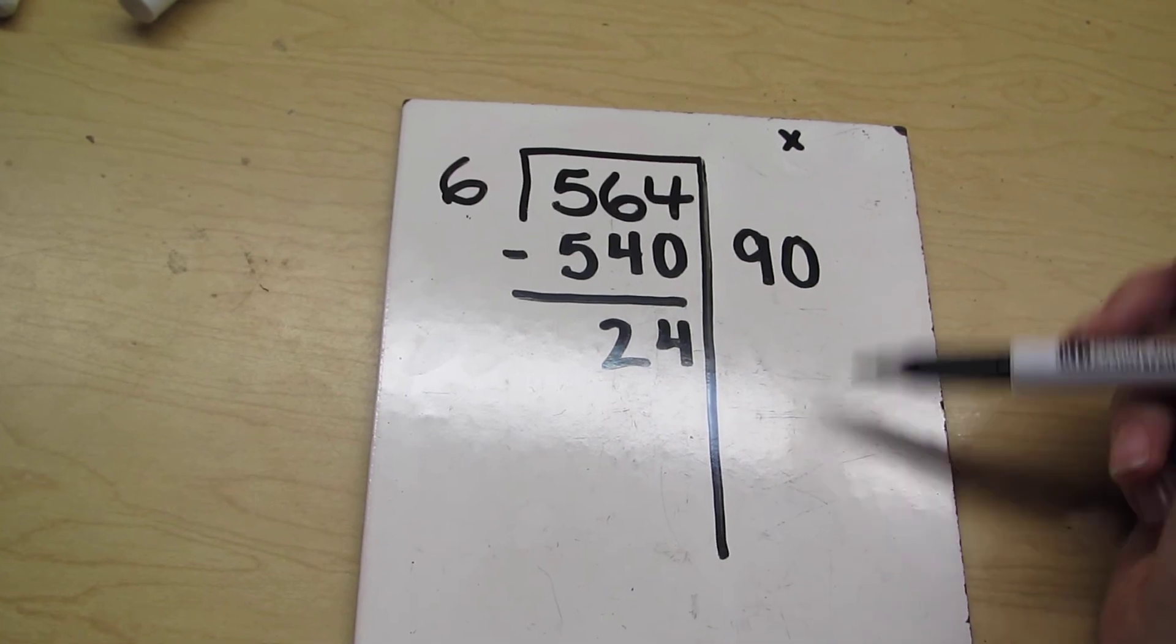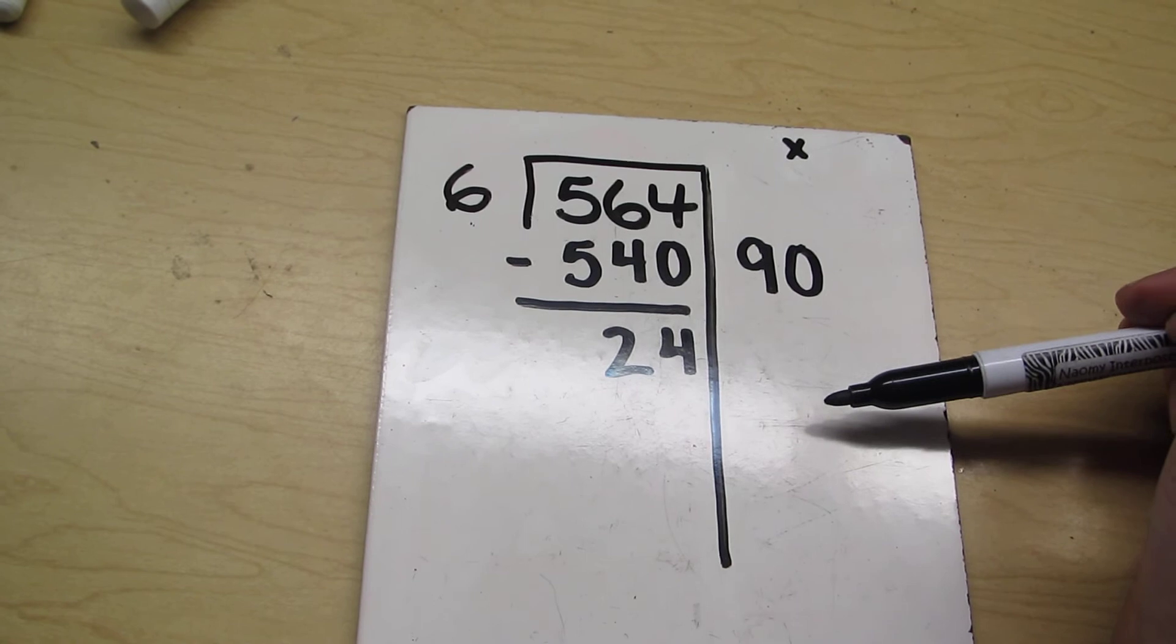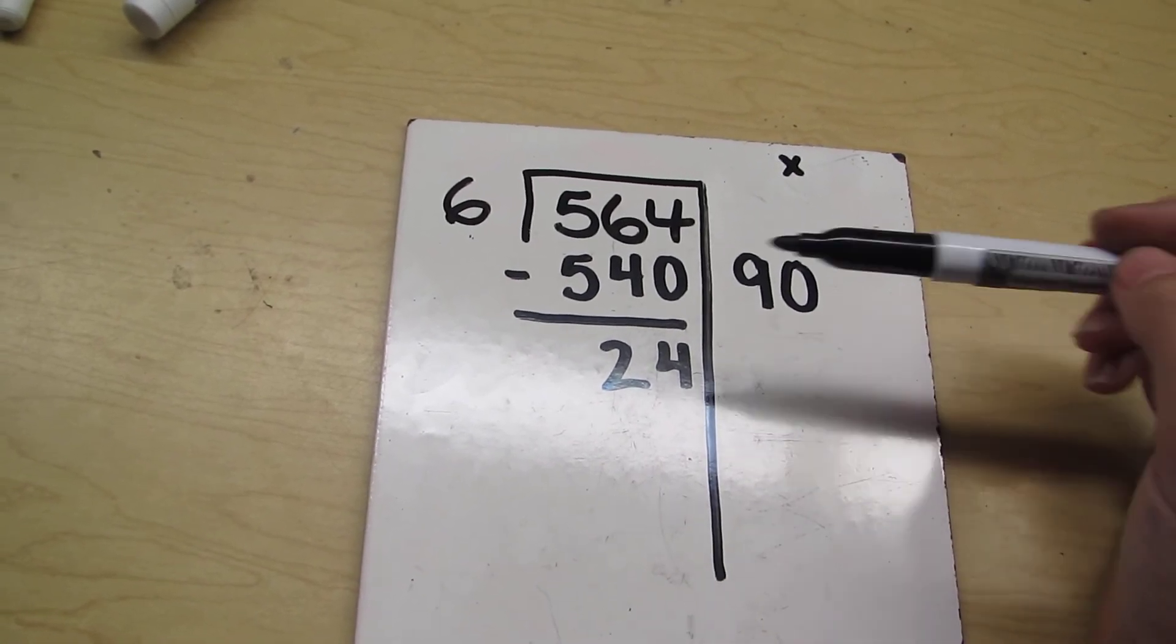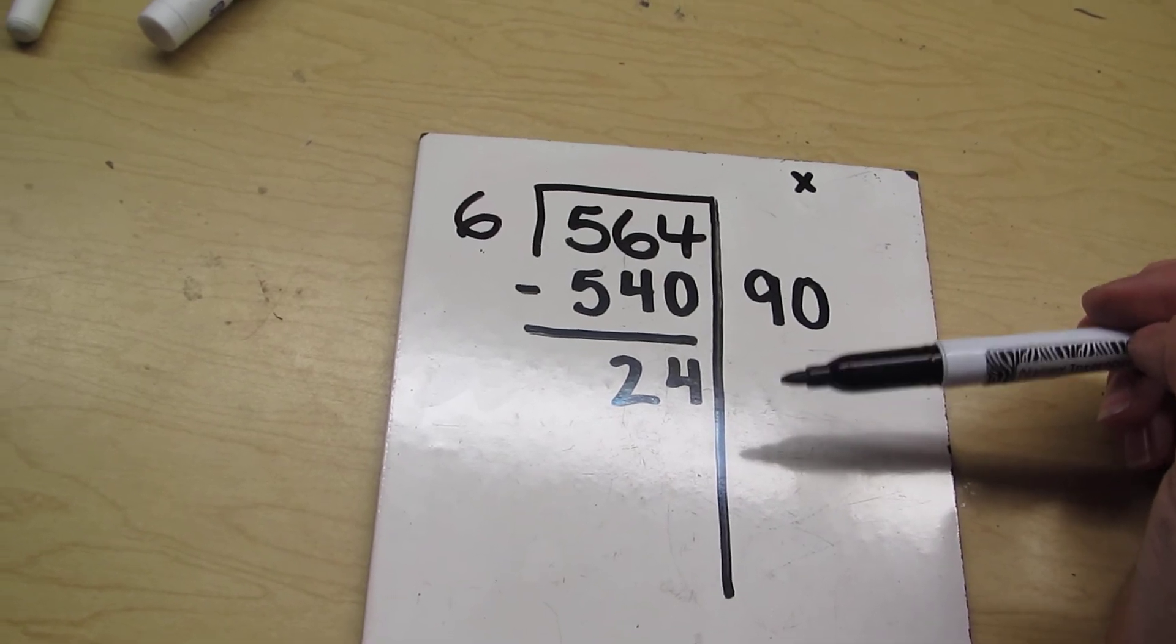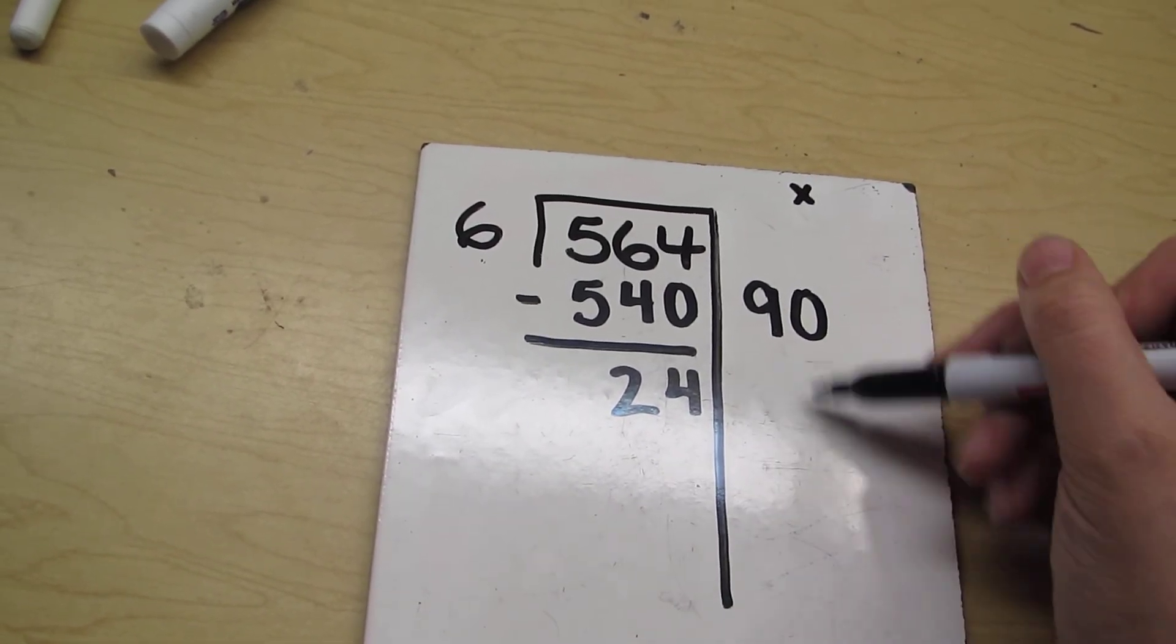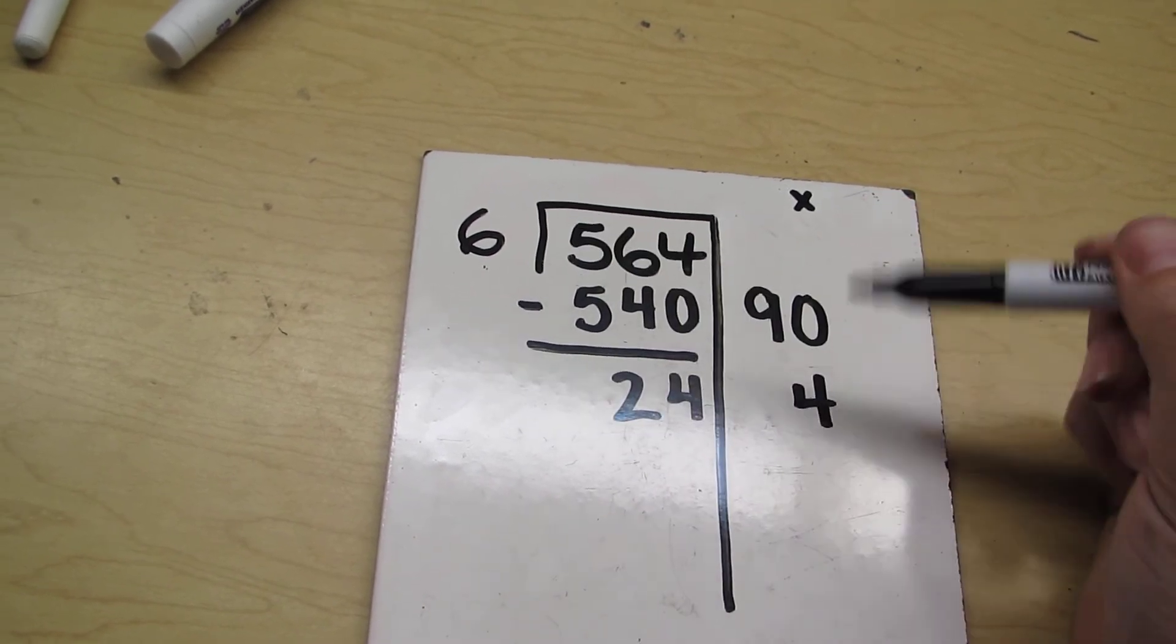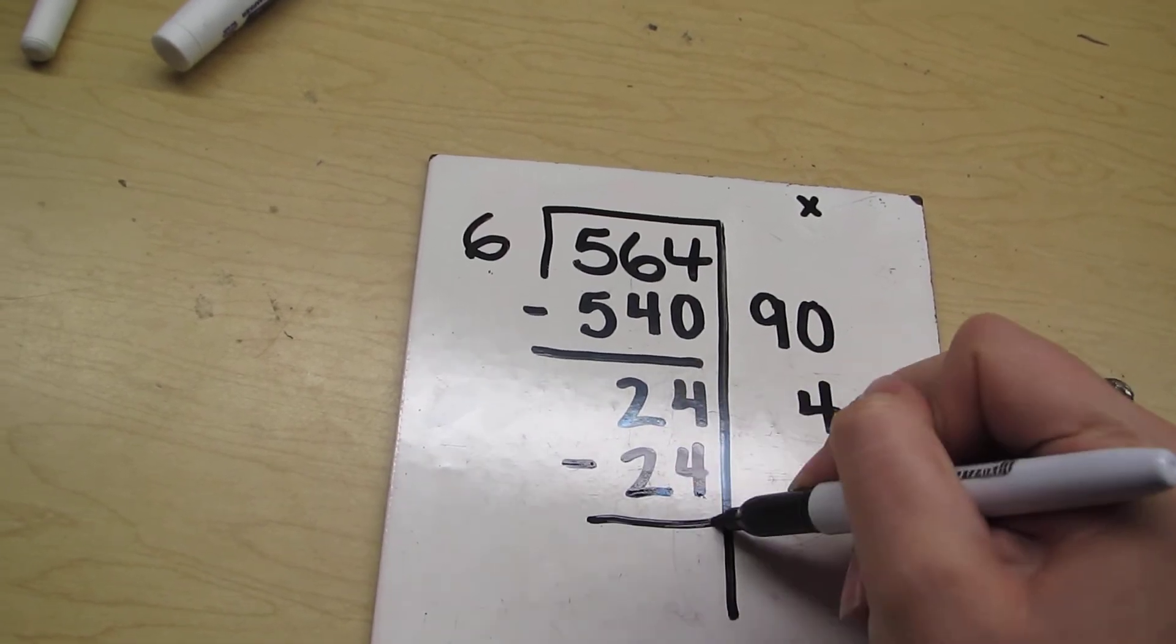Now I have a smaller number that I could work with. I'm going to think, okay, 6 times what equals a number that's close to 24? Well, I actually happen to know from reflex math and mad minute that 6 times 4 is actually 24. So 6 times 4 is 24. Do my subtraction.